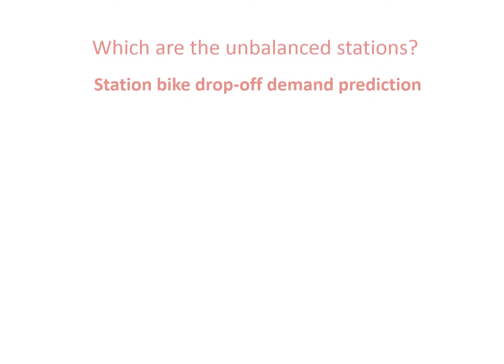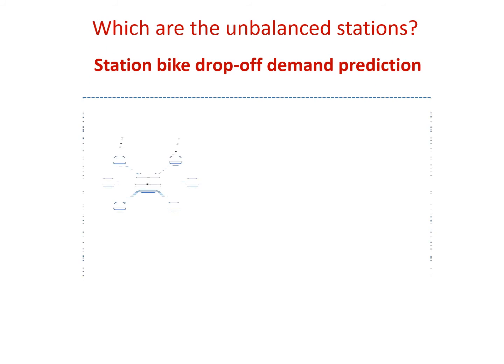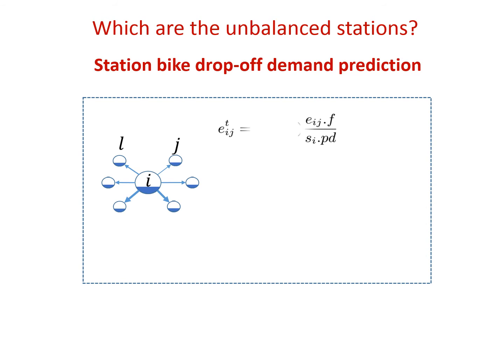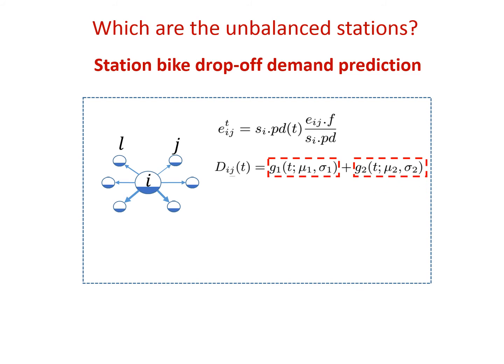For the drop-off demand, we first predict the number of bikes that will be directed from station I to station J. Then we estimate the bicycling time, which is represented by a two-peak Gaussian function. Then we can calculate the number of bikes that will be dropped off at station J during a future time period.